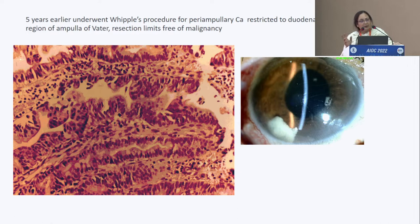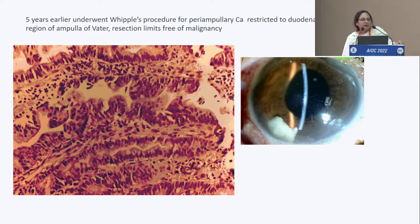There is a granulomatous inflammation and the oncologist says the malignancy is taken care of. These are the scenarios where you will not hurry to start anti-TB drugs simply because the Mantoux is positive. But still it could be TB in a patient with treated cancer.